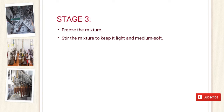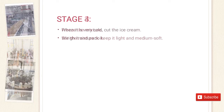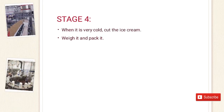Mr. Anwar and Imran and his class fellows moved forward to observe the next step. Mr. Anwar told them: In this step, we freeze the mixture. The tubs are pushed into the chill room. The paddles stir all the time. Air is stirred into the ice cream mixture to keep it light and medium soft. When it is very cold, the ice cream is cut and weighed. The pieces are passed into the packing machine, where they are wrapped and boxed. They are then put in the cold store and kept frozen.